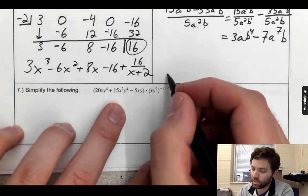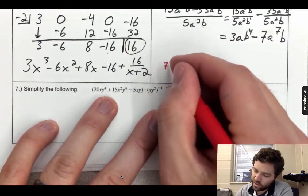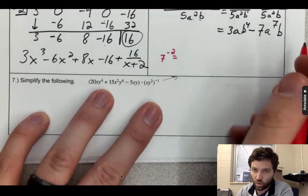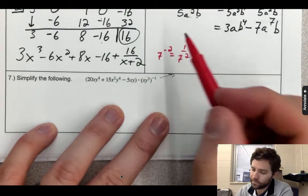Anything to the negative power is one over that thing to the positive power. Just a quick note here—this doesn't go with number six—but if you had like 7⁻², that's the same as 1 over 7². That's what a negative power or negative exponent means.